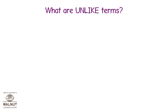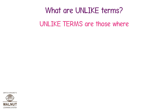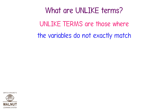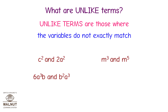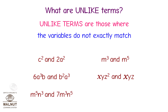What are unlike terms? Unlike terms are those where the variables do not exactly match. For example: C² and 2A²; M³ and M⁵; 6A³B and B²A³; XYZ² and XYZ; M⁵N⁵ and 7M³N⁵; 10P⁵ and 9P². All these are unlike terms.